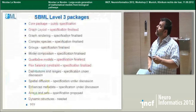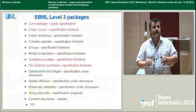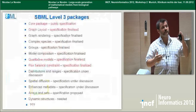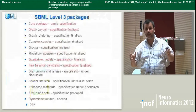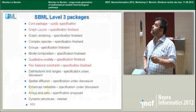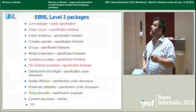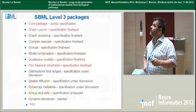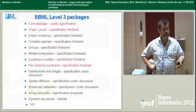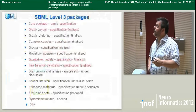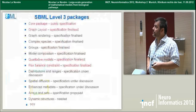SBML is now at level three. The important thing is that in level three, you have a modular language with various packages covering different aspects of models or different types of models. Today we will talk about the core package, which is shared between everyone, the layout package, and a package to encode qualitative models — logical models, Petri nets, and also flux balance constraints.